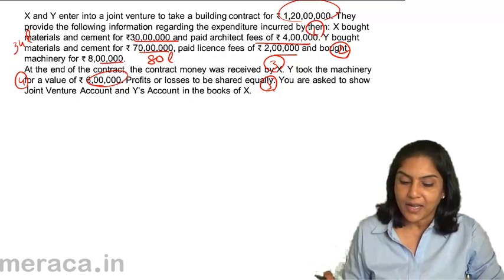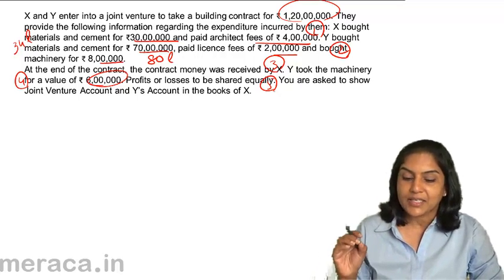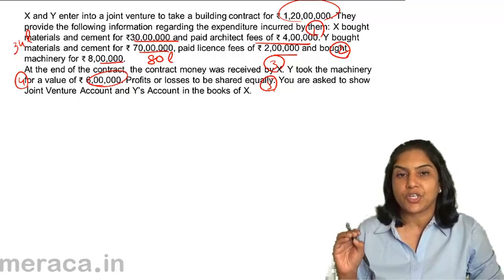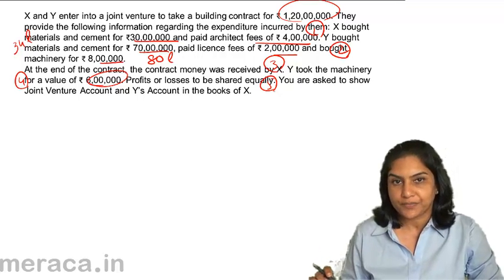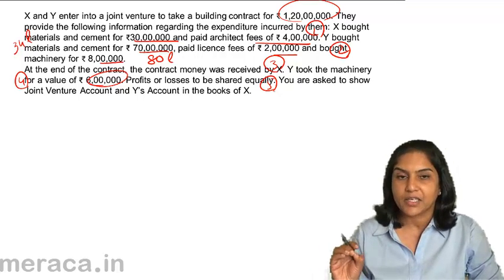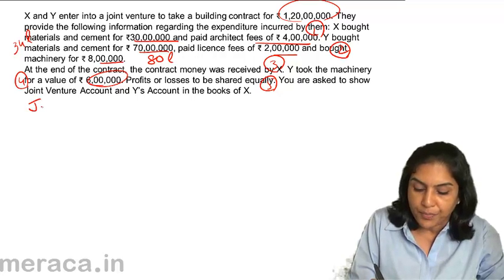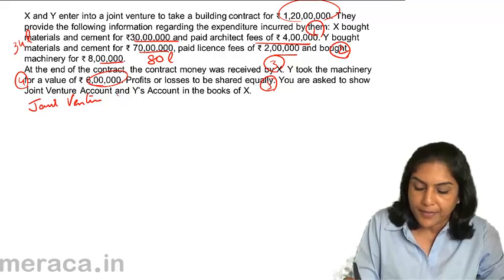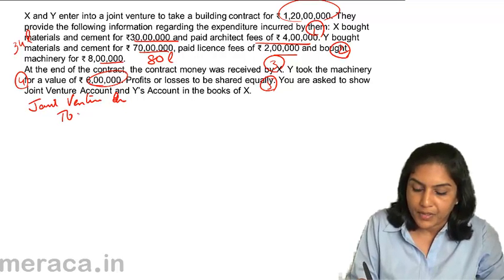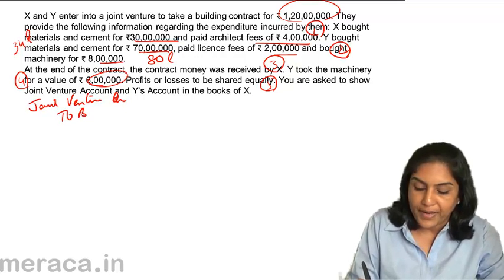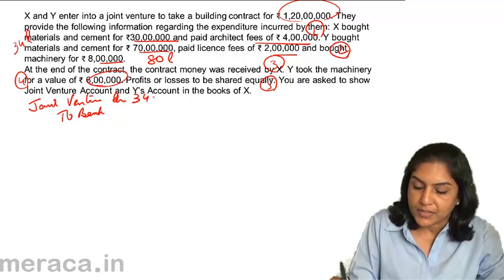The first entry: X spent 34 lakhs for the joint venture. The entry would be Joint Venture Account debit to Bank, 34 lakhs.